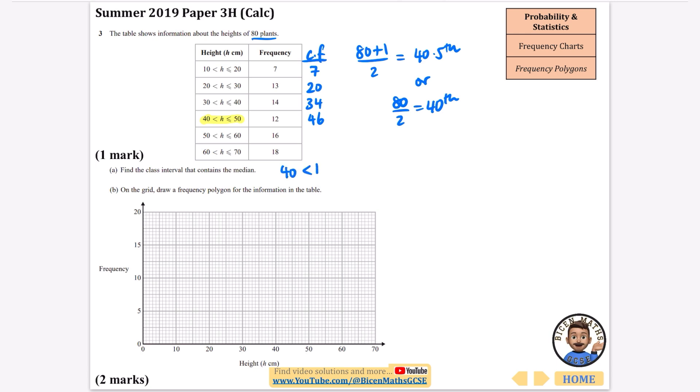I'm going to draw a frequency polygon for this, so again I'm going to do the middle of 10 and 20, 20 and 30, 30 and 40, 40 and 50, 50 and 60, and 60 and 70. Yep, they're all going to be the midpoints, 15, 25, 35, 45, 55, and 65.